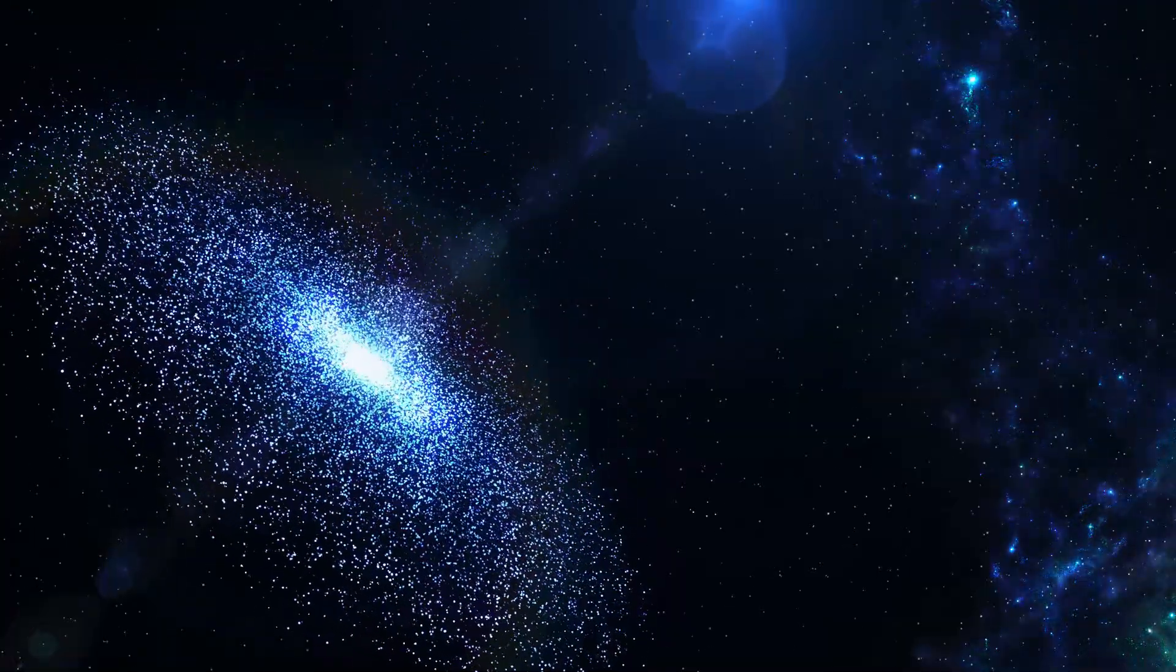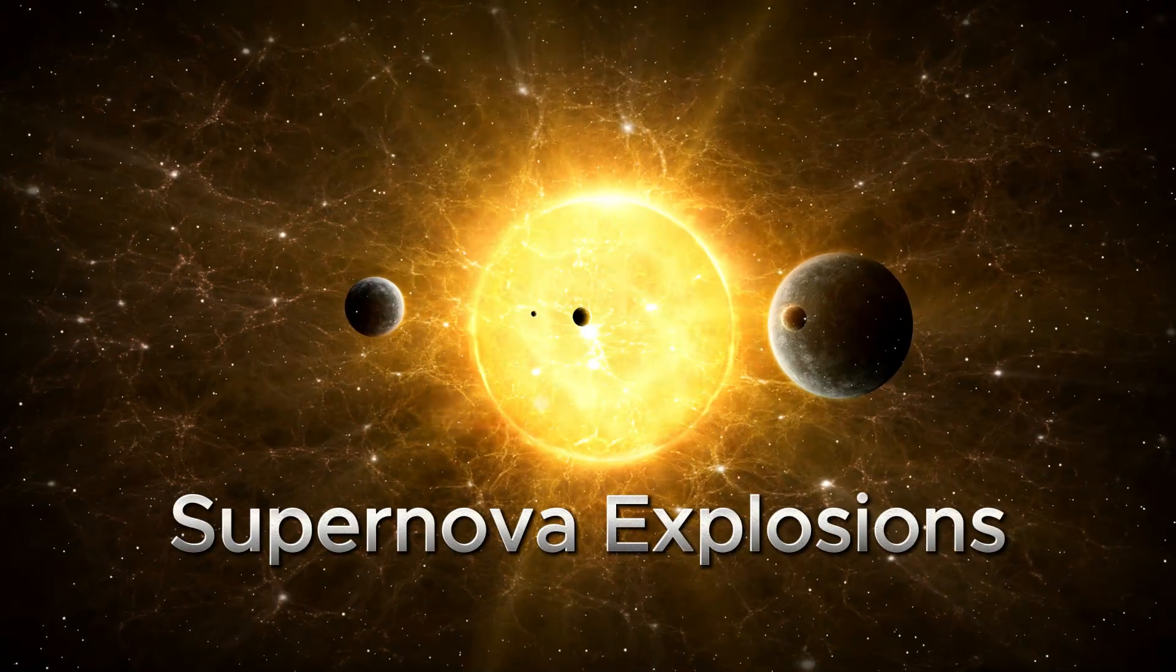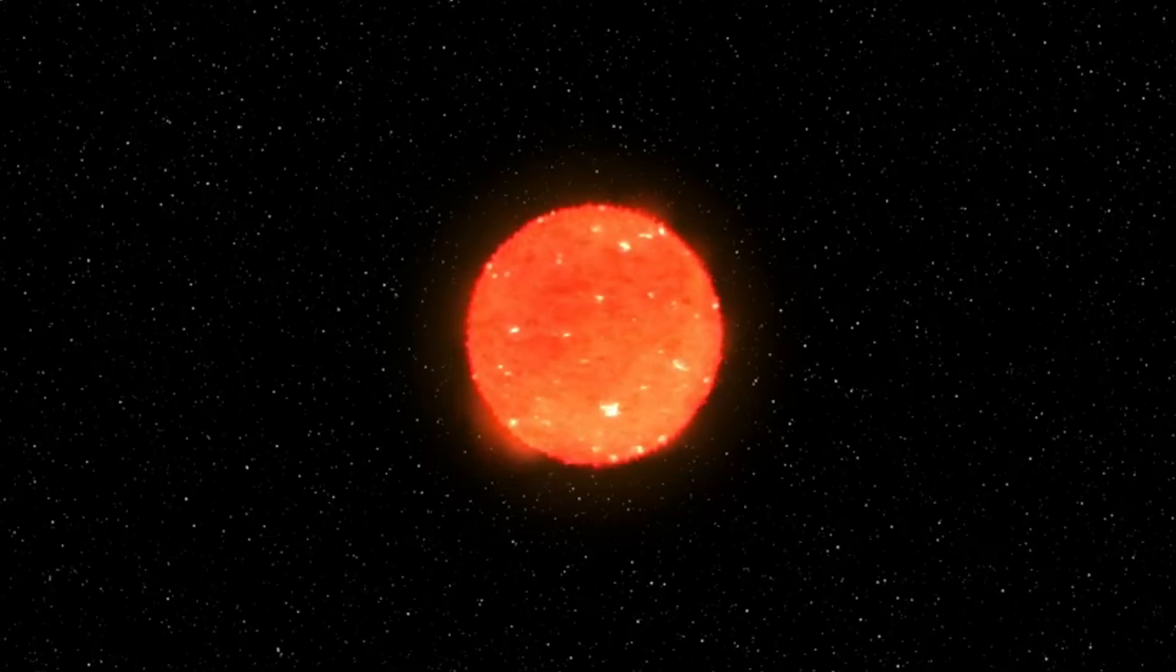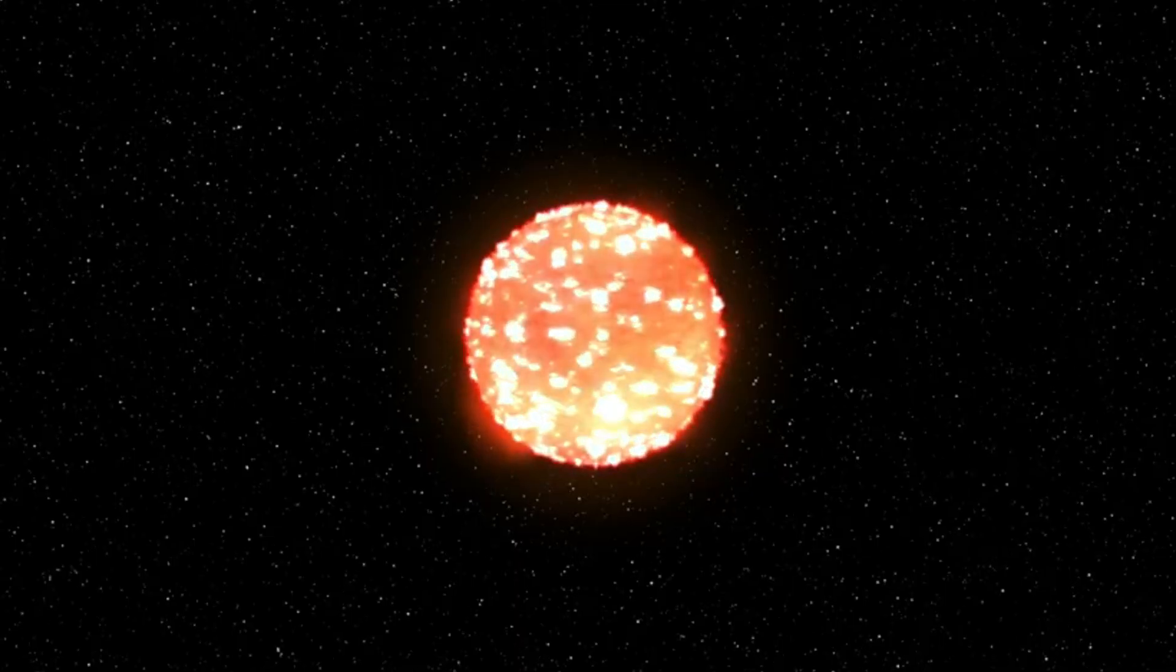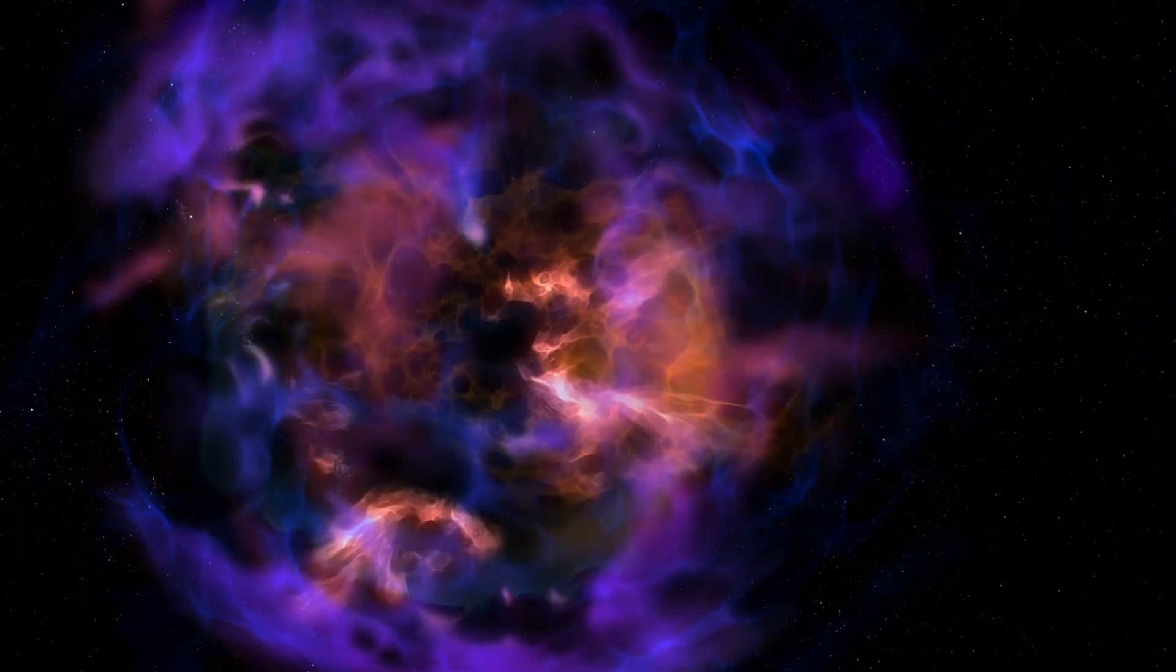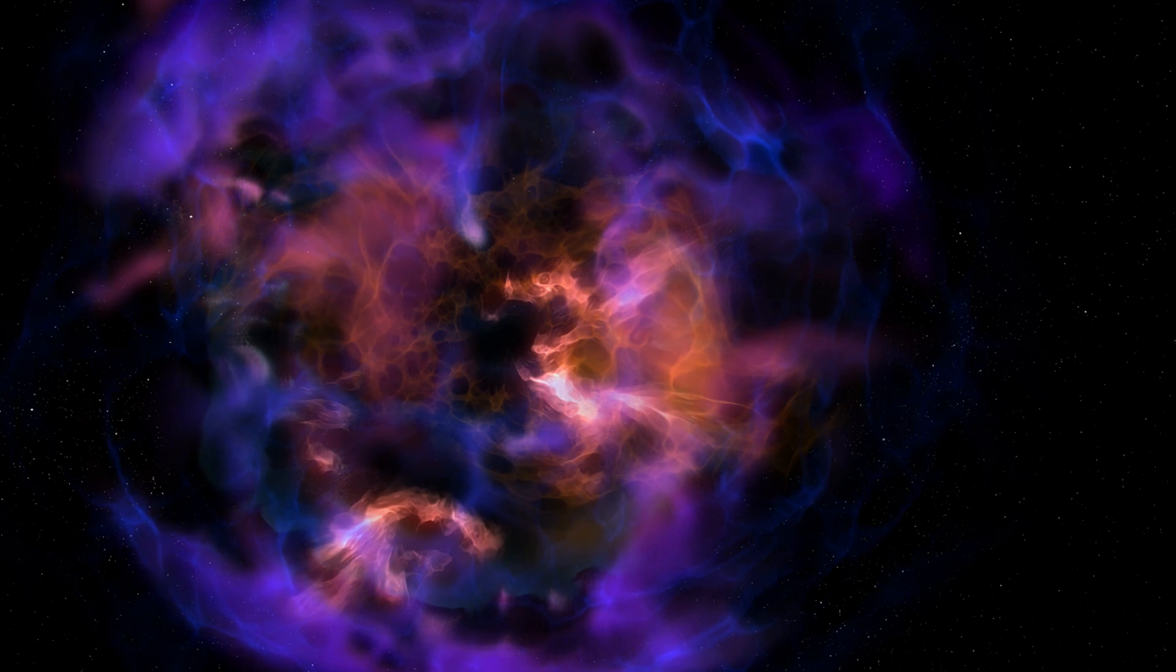When a massive star reaches the end of its life, it can explode in a supernova, an event so bright it can outshine an entire galaxy. If one happened close enough, within about 50 light years, the radiation could strip away Earth's atmosphere and fry the surface. The good news?